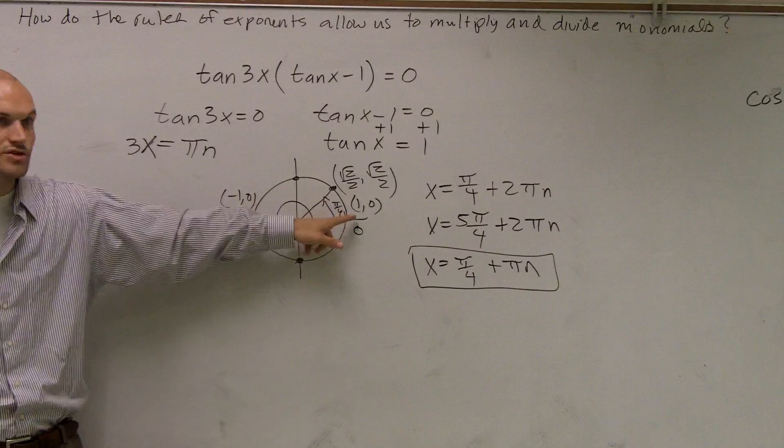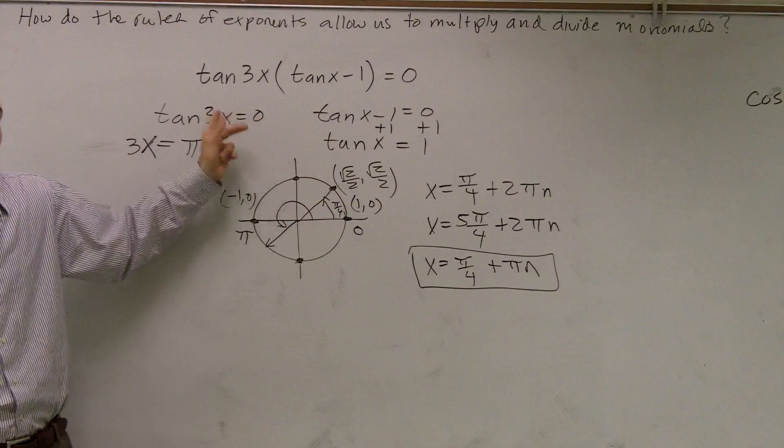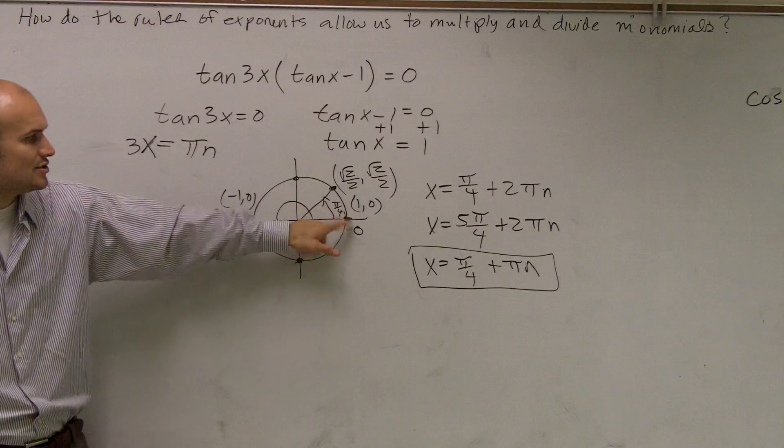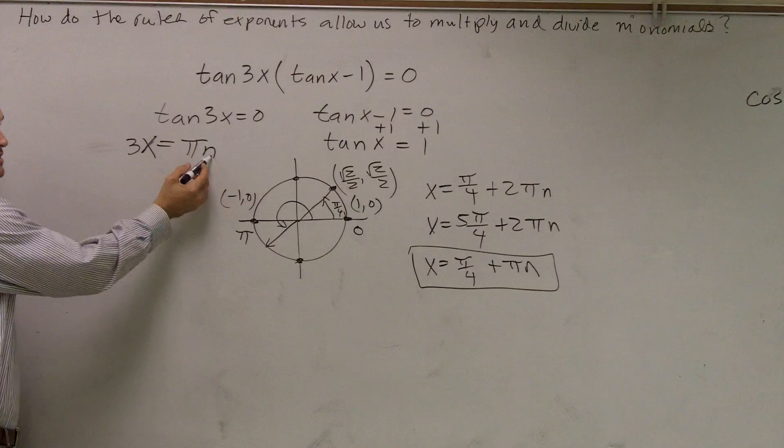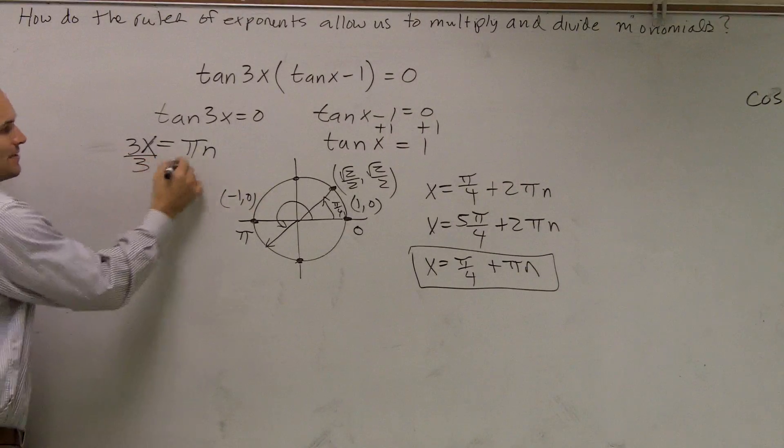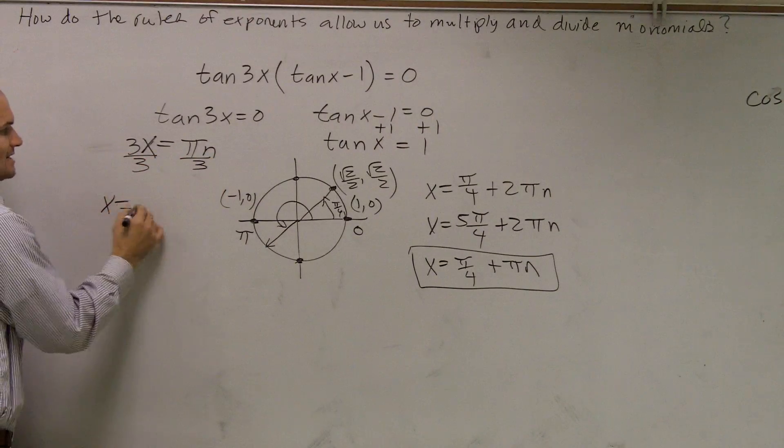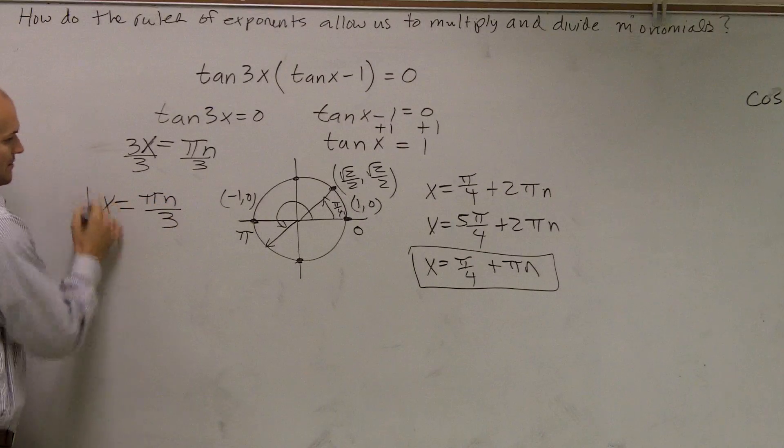Between these two points, these are our two solution points when tan(3x) equals 0. Between those two, you just keep on adding π. So that's why I just multiply π times my integer, and then I just divide by 3, and x equals πn divided by 3.